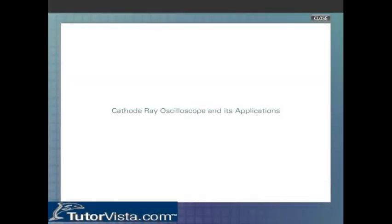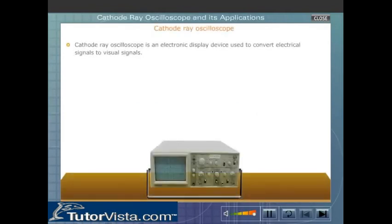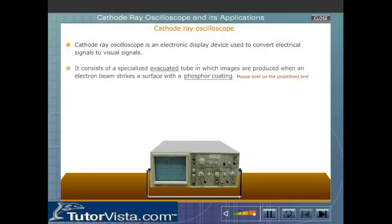Cathode ray oscilloscope is an electronic display device used to convert electrical signals to visual signals. It consists of a specialized evacuated tube in which images are produced when an electron beam strikes a surface with a phosphor coating.